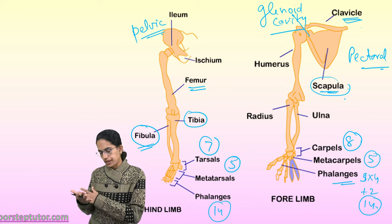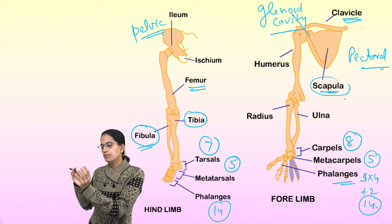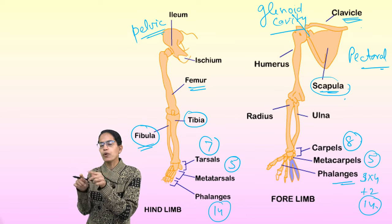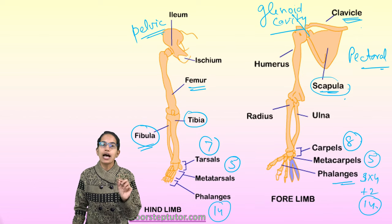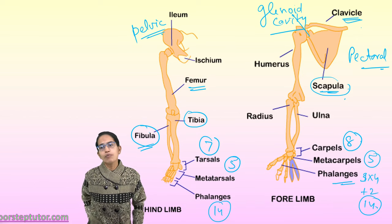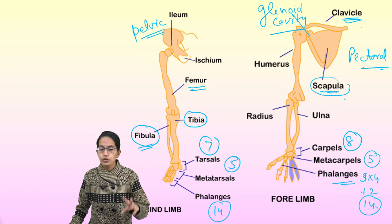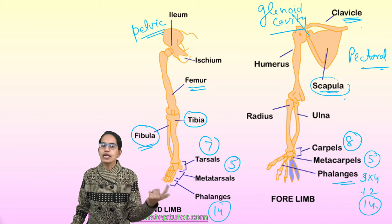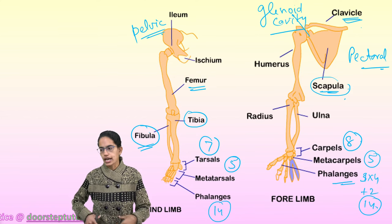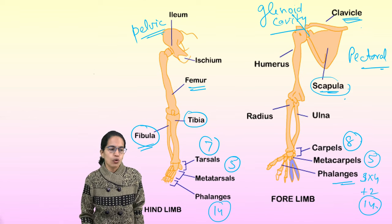The ilium, ischium, and pubis fuse to form the pelvis. The pelvic girdle is also known as the hip girdle. It is the point where another ball and socket joint is present. The femur is the longest bone. The pelvic girdle has the important role of transferring the weight of the body to the legs, and it also protects the lower internal organs and the reproductive organs.